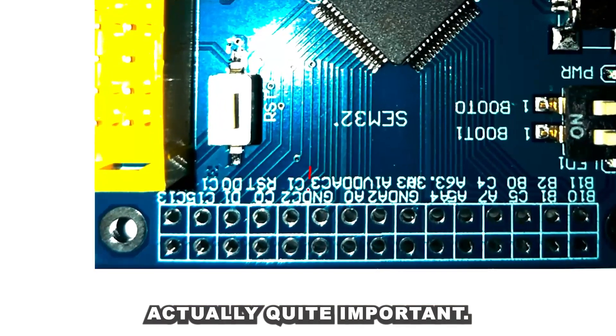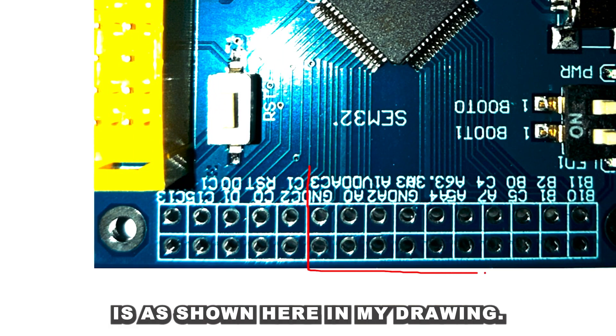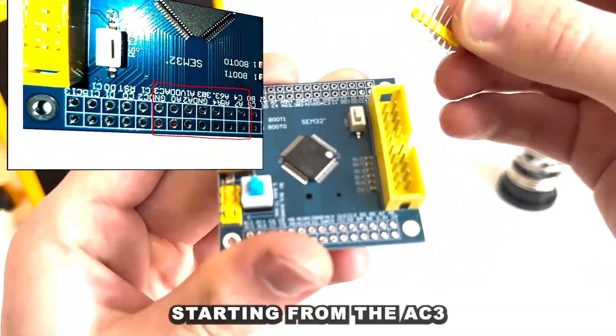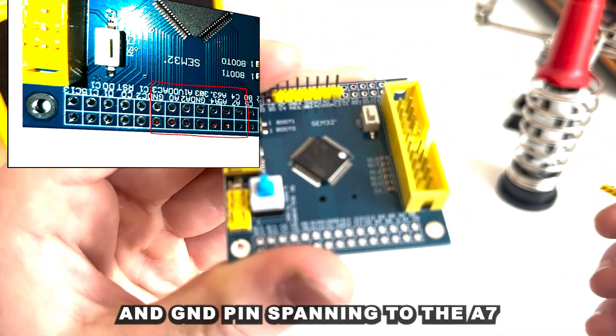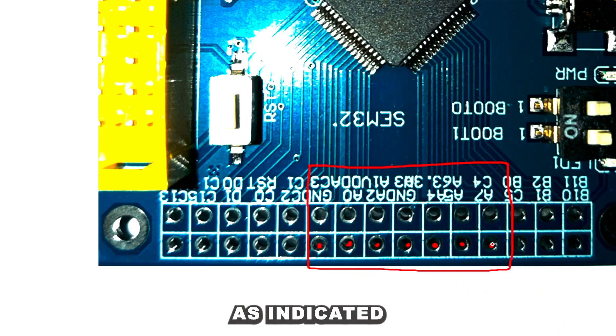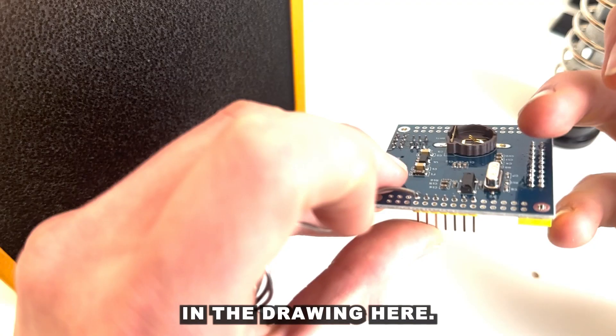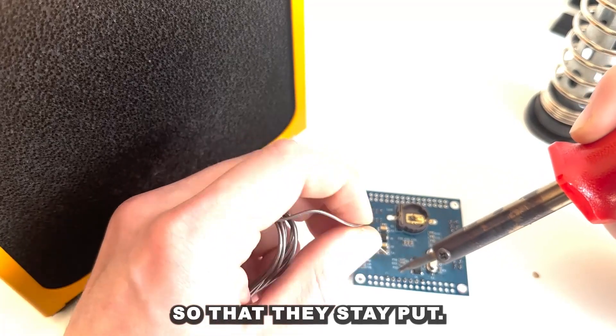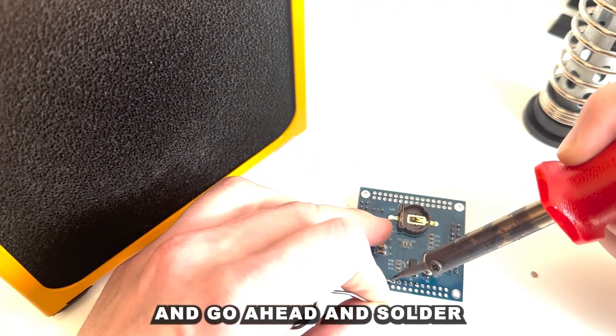So this bit is actually quite important. We're gonna place this as shown here in my drawing. We're gonna place the pins starting from the AC3 and GND pin spanning to the A7 and the C4 pin as indicated in the drawing here. What I do is I solder one of the pins so that they stay put and go ahead and solder the rest.